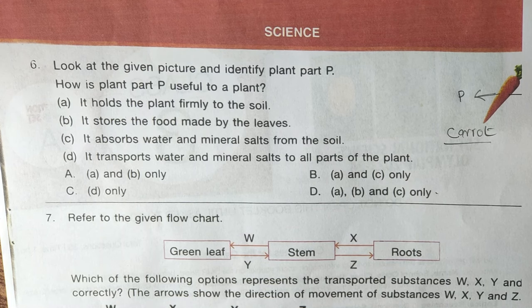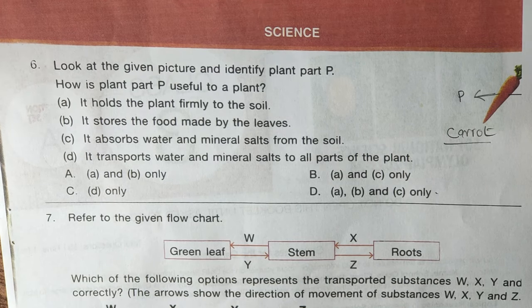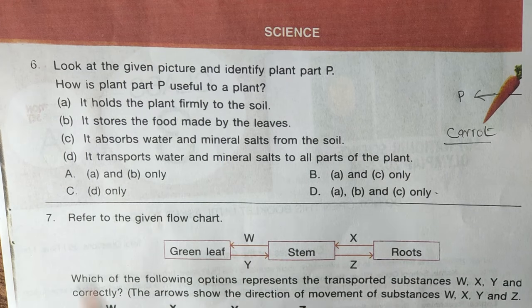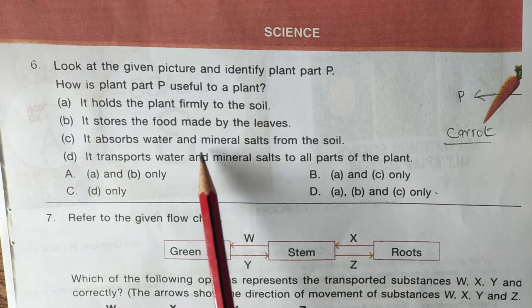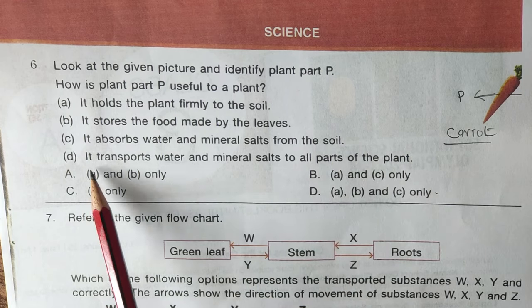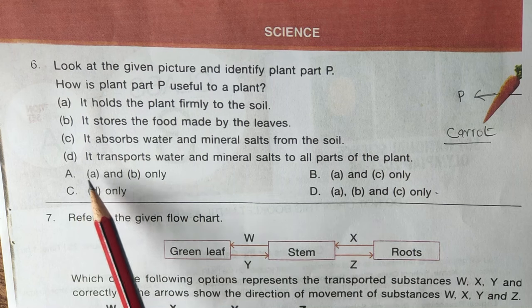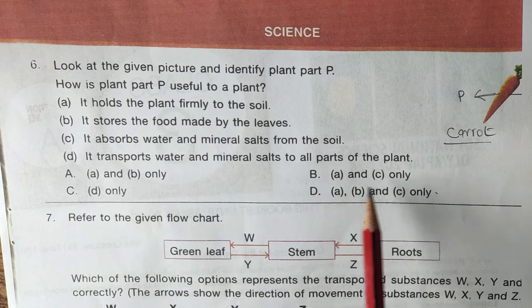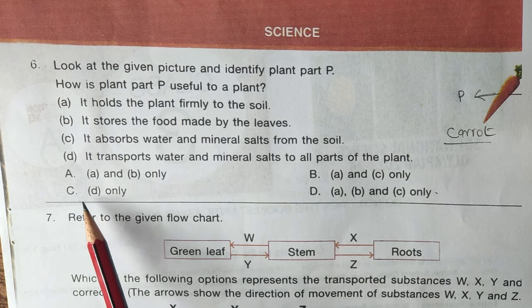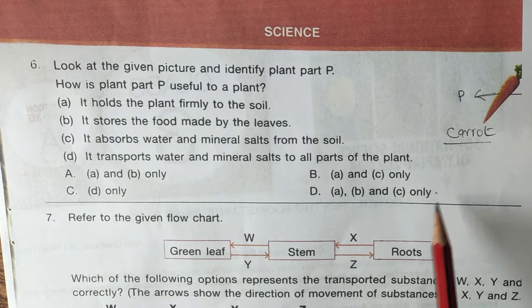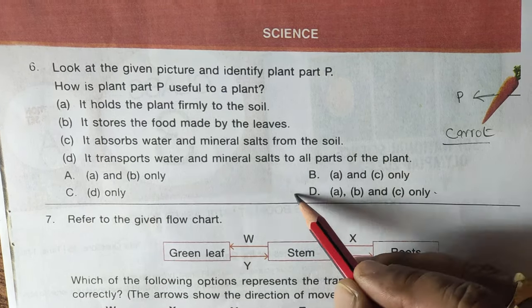Science section. Question number six: look at the given picture and identify plant part P — how is it useful to a plant? Options are: A — it holds the plant firmly to the soil; B — it stores food made by the leaves; C — it absorbs water and mineral salts from the soil; D — it transports water and mineral salts to all parts. The correct answer is option D — A, B, and C only.